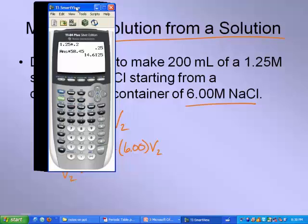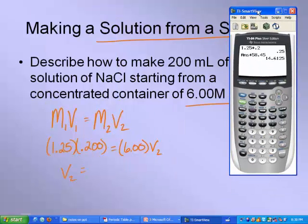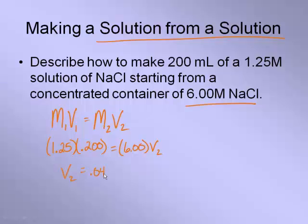Let's do this math real fast. I'm going to slide this over so I can see my numbers. So I have 1.25 times 0.2 divided by the thing connected to the variable, 6, is 0.041666667.